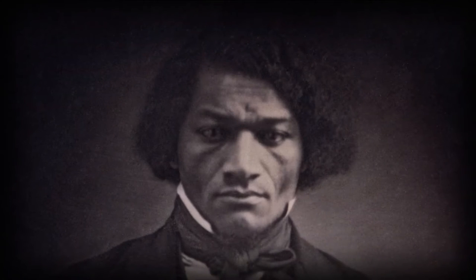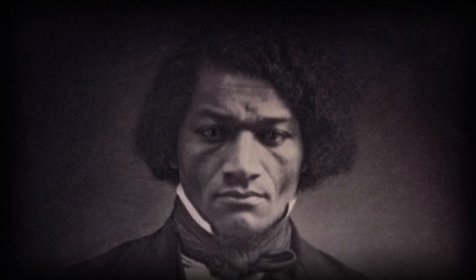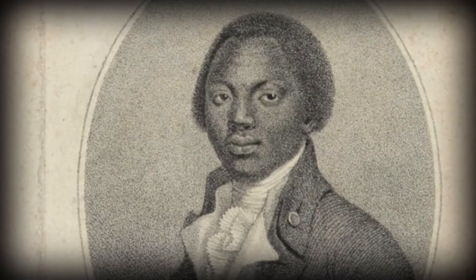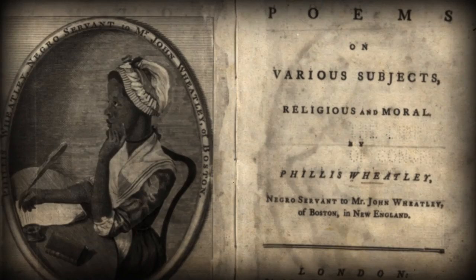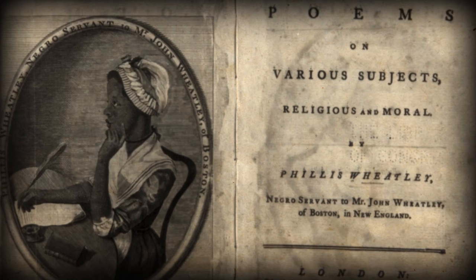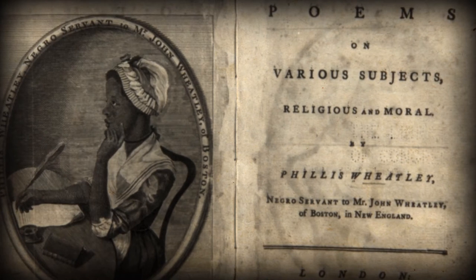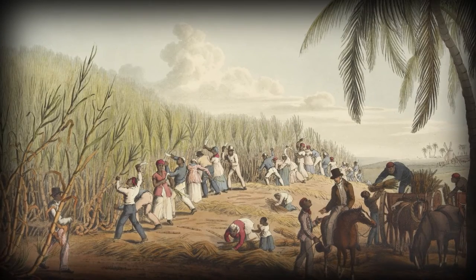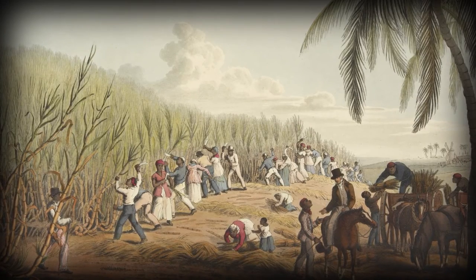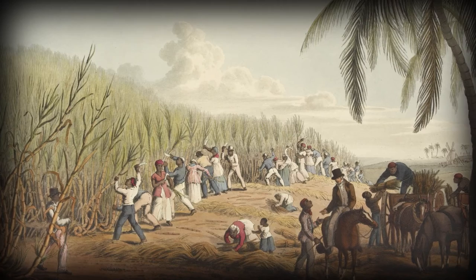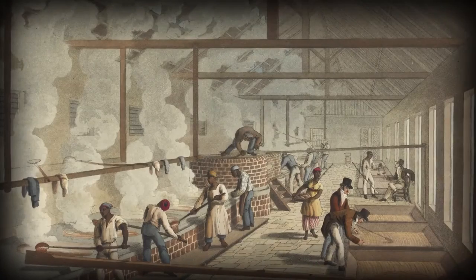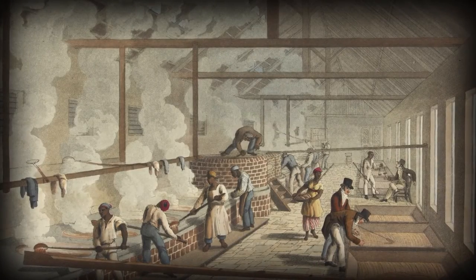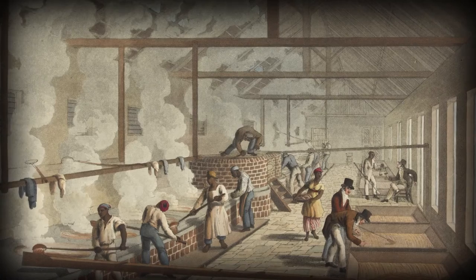We mostly know the names of the men who led the fight against slavery — men like Frederick Douglass in the United States and Olaudah Equiano in the United Kingdom. But many of the movement's unsung heroes were women, such as the African American activist and writer Phyllis Wheatley. In early 19th century Britain, housewives refused to buy sugar grown on plantations worked by enslaved people. Their boycott was crucial to ending the legal enslavement of human beings in the British Empire.